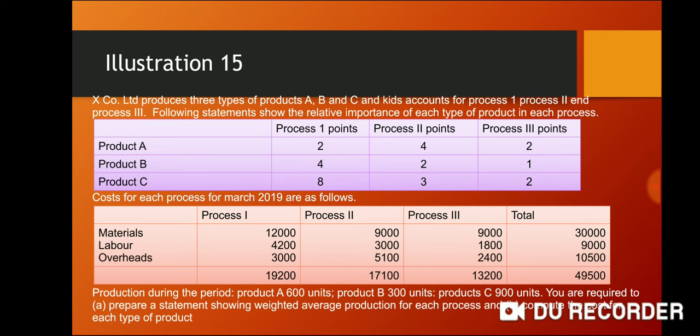If you have a process account, you will have a process account with 3 products. This method is used by the importance of the product. You will have to make the product and multiply it with a unit. There is no problem — that is the same statement.